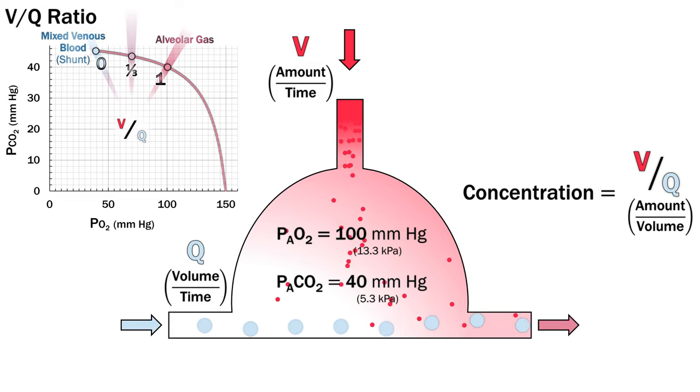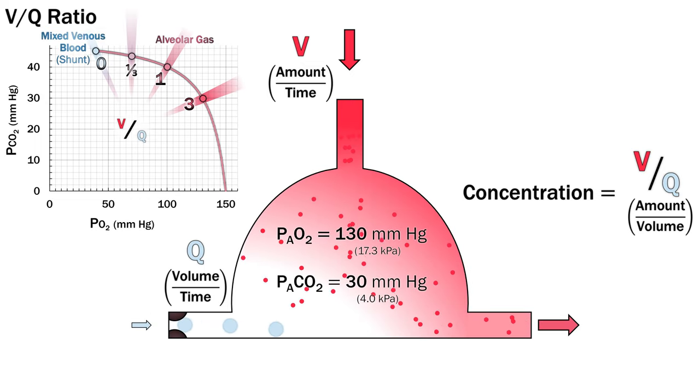What happens if we keep increasing the ratio? We can do that by reducing the perfusion to an area of ventilated lung or in theory by just increasing total ventilation to more than what the body requires for normal gas exchange. Instead of approaching mixed venous blood, we're now moving closer to the composition of inspired air.